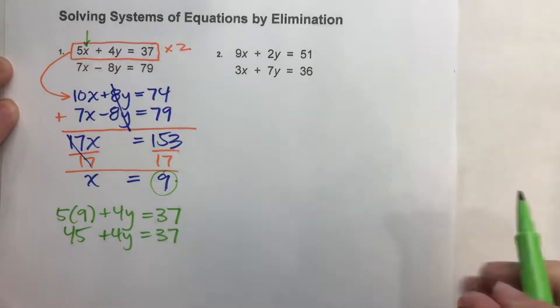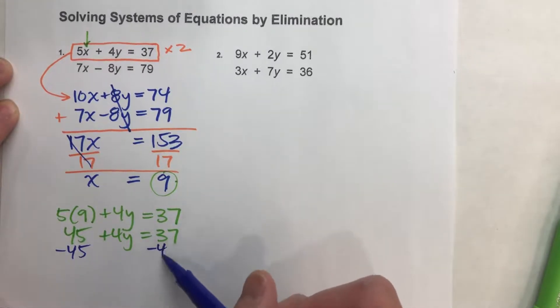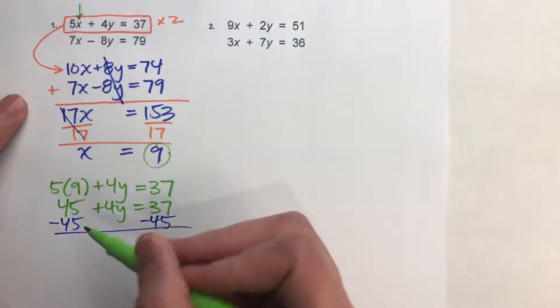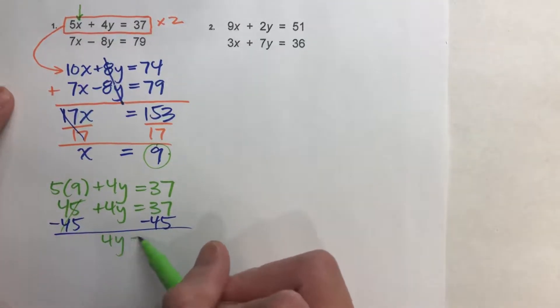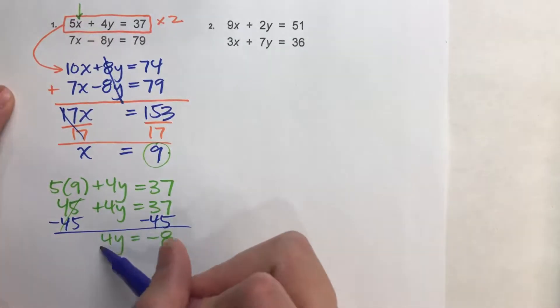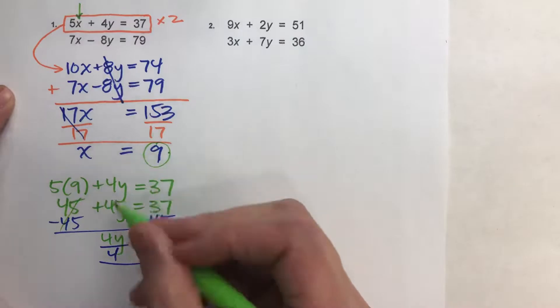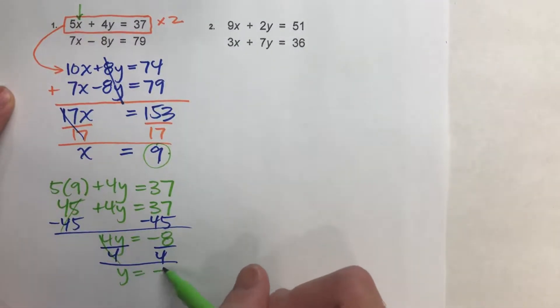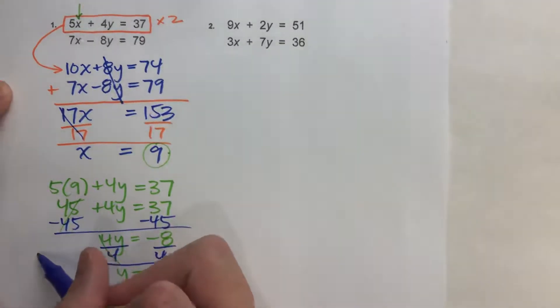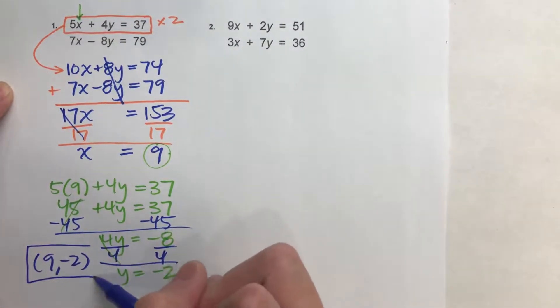Now to solve for y, I need to subtract 45 from both sides. I end up getting 4y equals negative 8. And then divide both sides by 4. I end up getting y equals negative 2. And there's my solution. x is 9, y is negative 2.